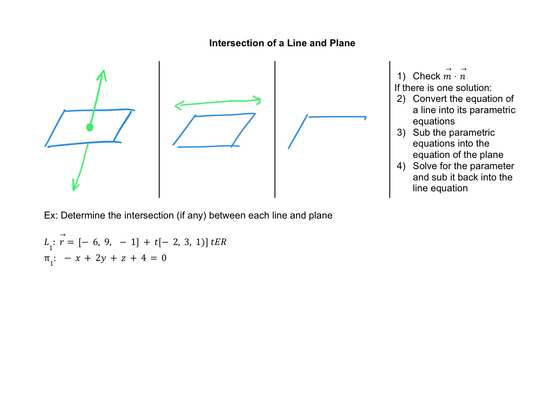The next case is we have a plane and our line is directly on it fully, which means there are an infinite number of points of intersection — every point on the line is a point of intersection. Now, how do we differentiate between these three setups?